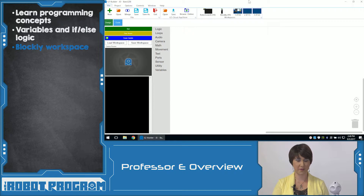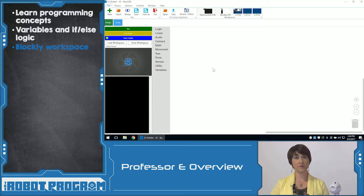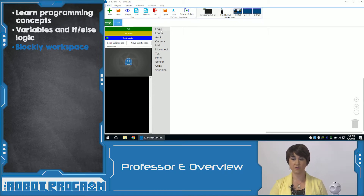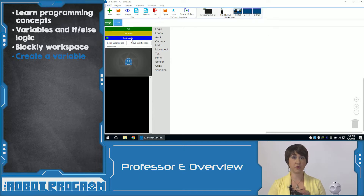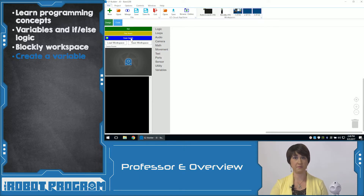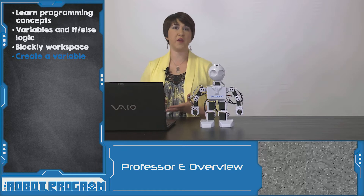Let's start with our Blockly workspace. I'm already in Blockly, and if I want to code something, I can see that all the options are over here in this grey menu. We can also see that we have something here that says Create Variable. Not only are we going to create a variable, I'm also going to show you how to use them. But what is a variable?